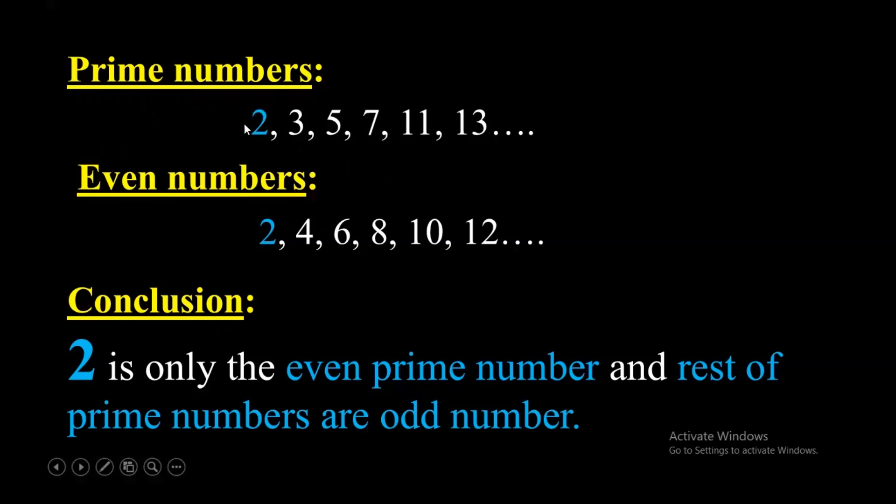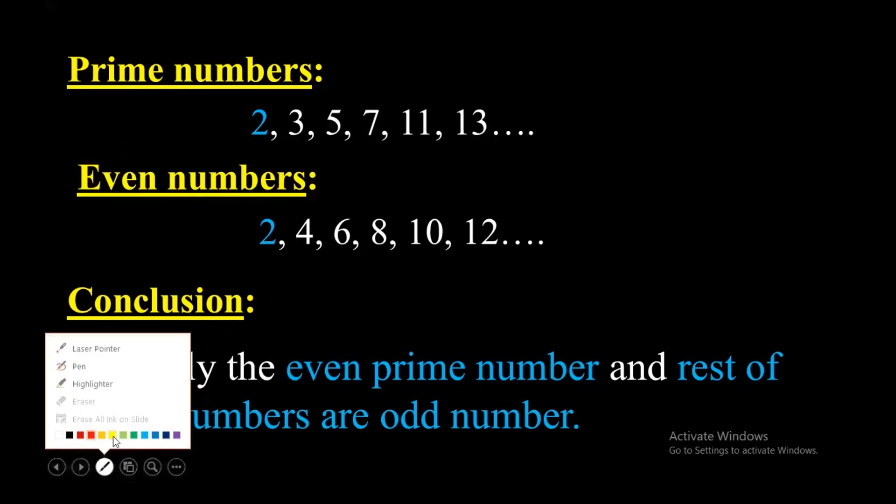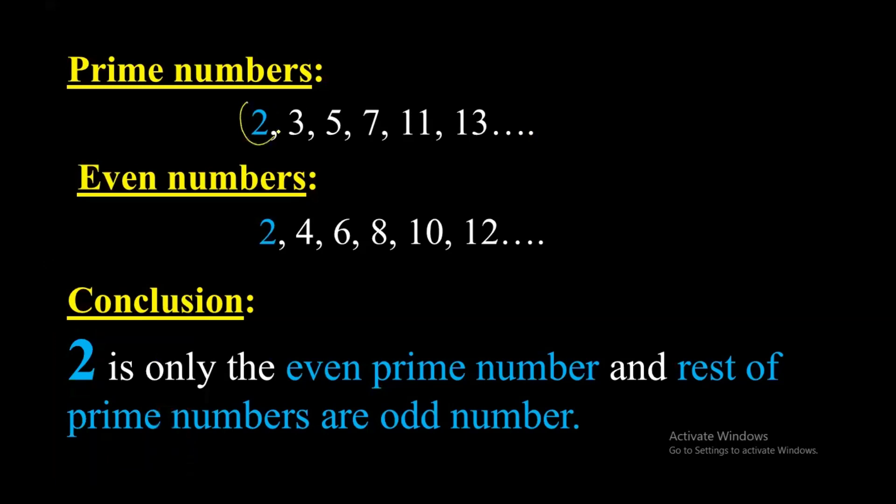You are observing that 2 is common in prime number as well as even number. So we can say 2 is only the even prime number and rest of prime numbers are odd numbers. You are observing that this is a prime number which is even, even prime number. And rest of the numbers are odd prime numbers.